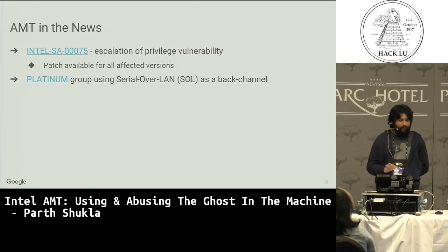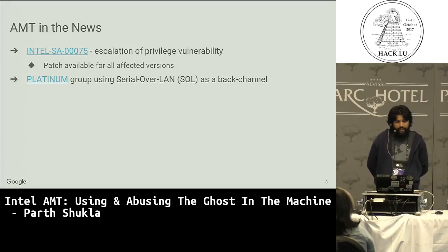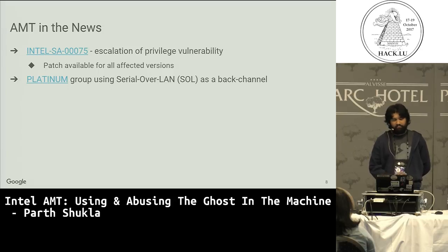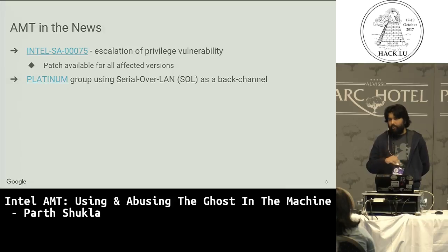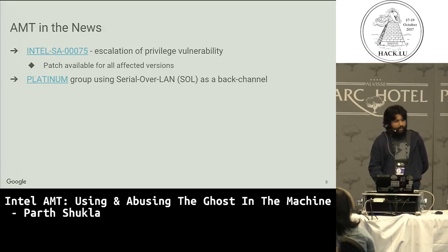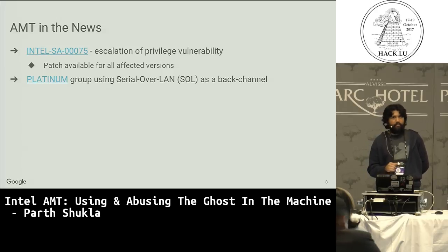AMT has been in the news this year. First, there was Intel SA-75, the Escalation of Privilege vulnerability — basically HTTP digest auth could be bypassed with a null response. You just respond with nothing and you're in. For this attack to be successful, AMT needs to be provisioned and the attacker needs to be on the same local network. A patch is available. The second news item is malware developed by the Platinum Group, seen hiding communication from the OS by using AMT Serial over LAN — so any software looking for suspicious traffic in the OS will not see it.